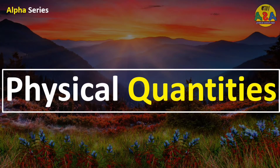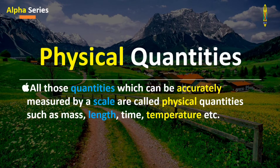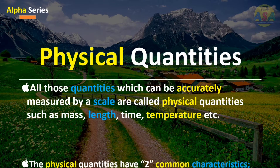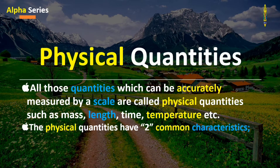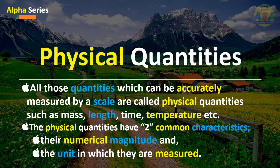What are physical quantities? All those quantities which can be accurately measured by a scale are called physical quantities, such as mass, length, time, temperature, etc. Physical quantities have two common characteristics: number one, their numerical magnitude, and number two, the unit in which they are measured.